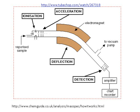Relative isotopic masses of elements can be obtained using an instrument called a mass spectrometer. This separates the individual isotopes in a sample of the element and determines the mass of each isotope relative to the carbon-12 isotope, and it also measures the relative abundance of the isotopes. This information is presented graphically and is called a mass spectrum.